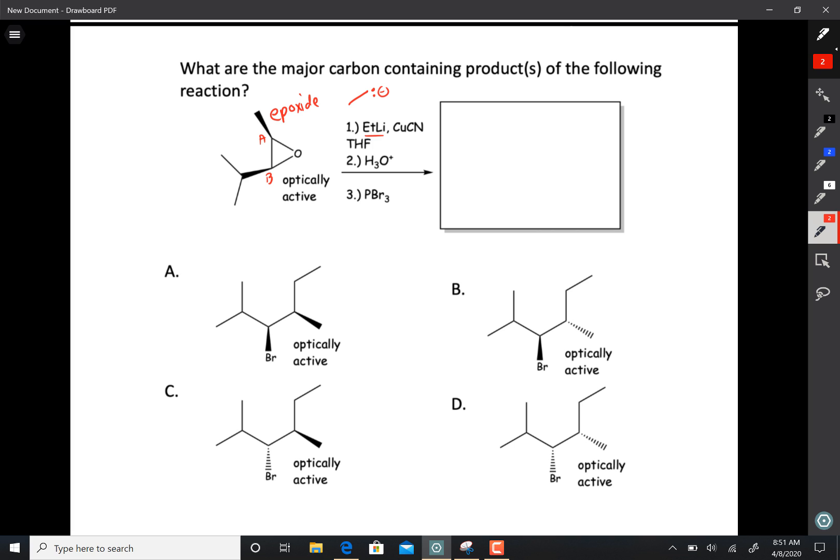They're equally substituted, but one side is less hindered because a methyl group is less bulky than an isopropyl group. When you're looking at hindrance, you're really looking at the carbons closest to the site you're going to attack. So this ethyl group is going to add to that side.